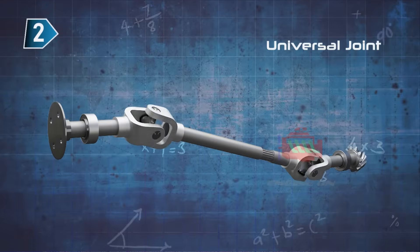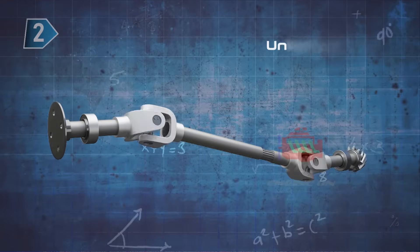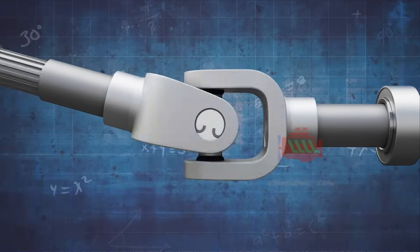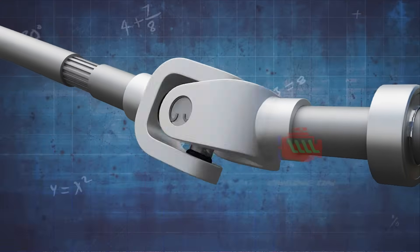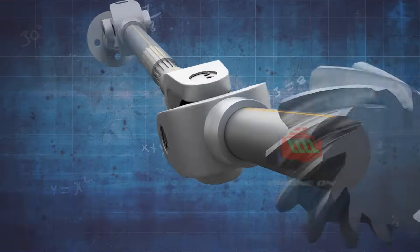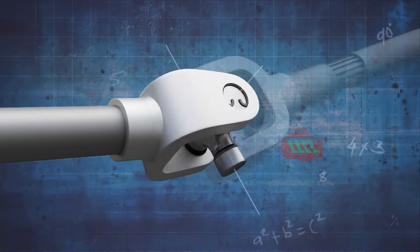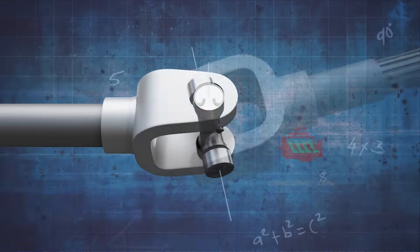A universal joint, also called a U-joint, is a mechanical component that allows rotational motion to be transmitted between two shafts even when their axes are not perfectly aligned, essentially acting as a flexible coupling that compensates for angular misalignment between shafts.